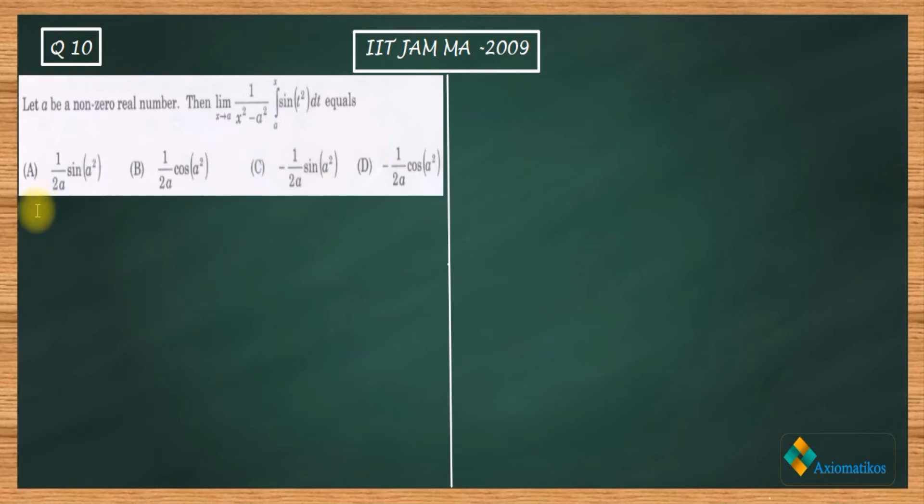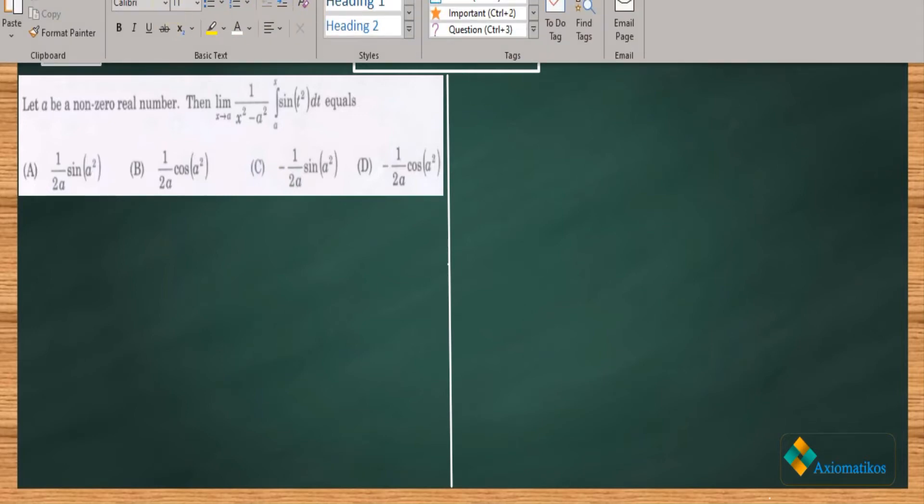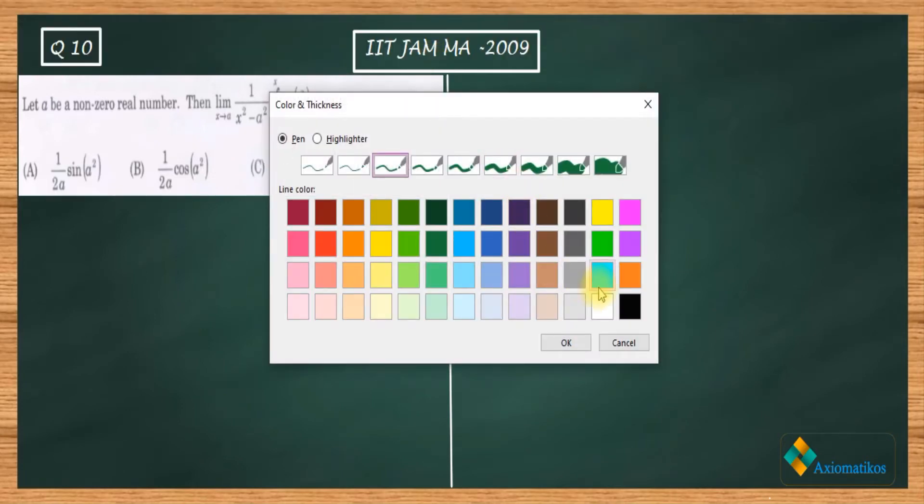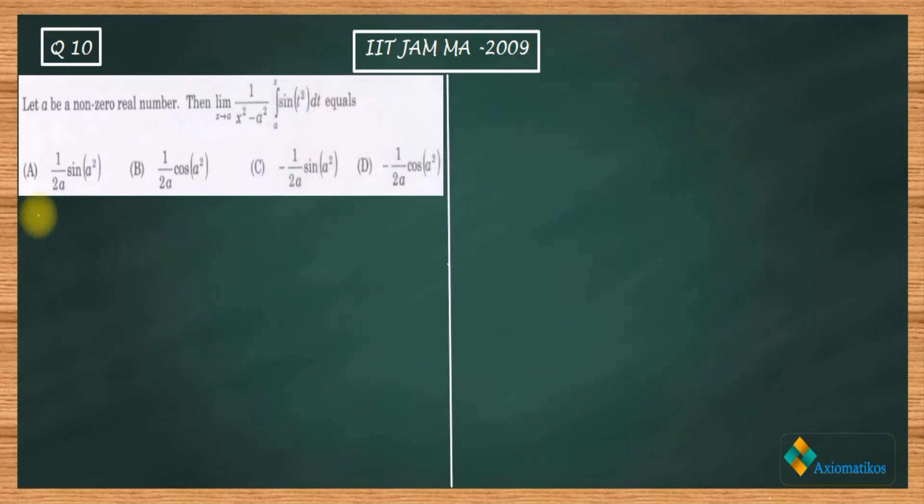Now let me write down, okay, firstly I should change my ink. What we have - we have this limit x going to a, 1 over x square minus a square, and from here you have a to x sine t square dt. So this is your question.